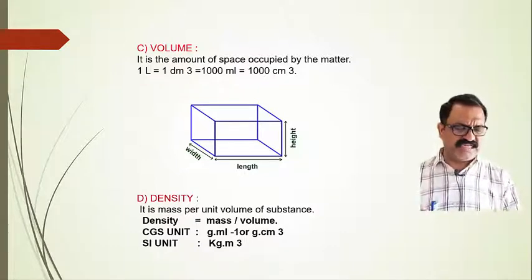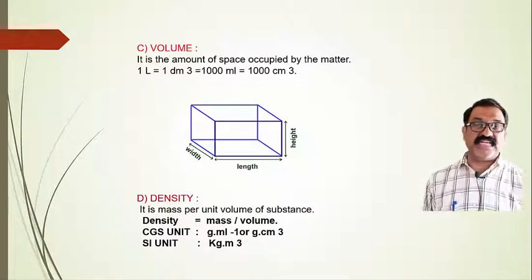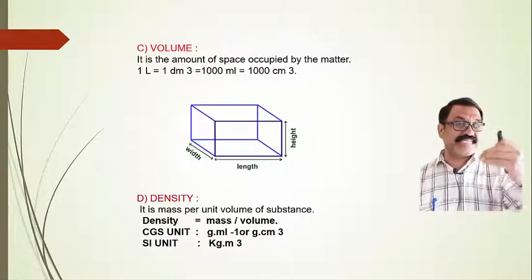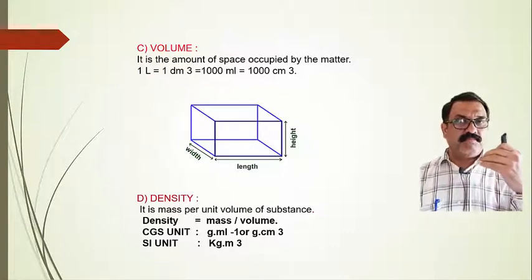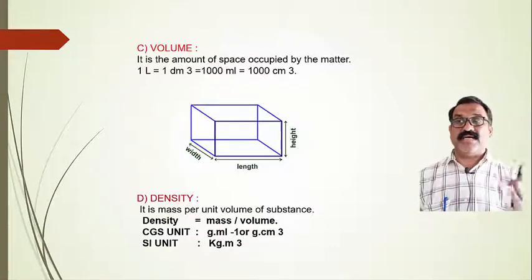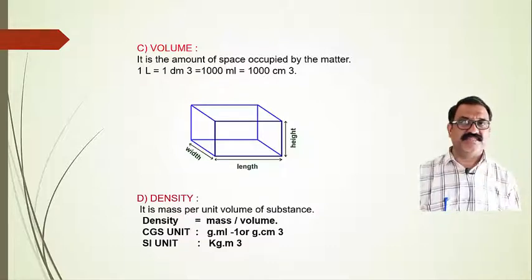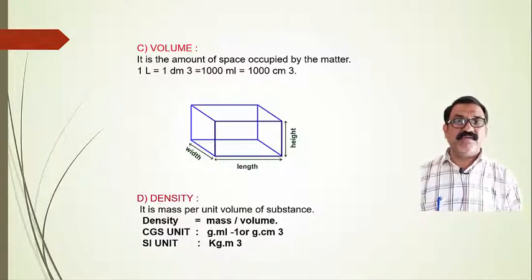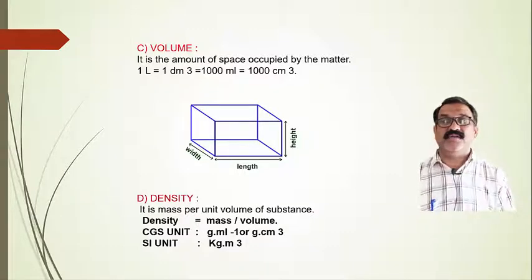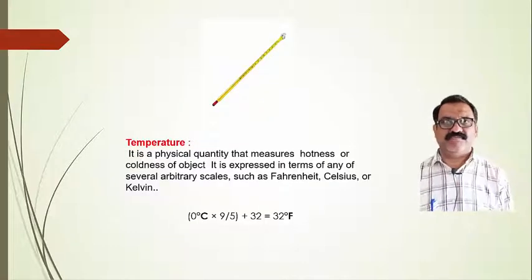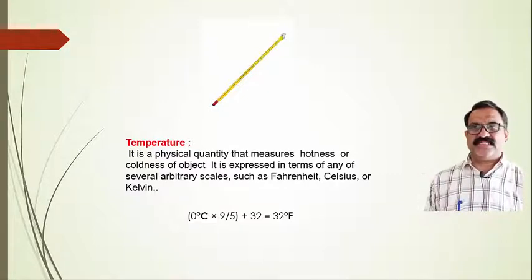The fourth important physical property for the study of chemistry is density. Density is nothing but the ratio of mass to volume — density equals mass upon volume. In the CGS system, mass is in grams and volume is in milliliters, giving grams per milliliter, or equivalently grams per centimeter cubed, as the CGS unit for density.